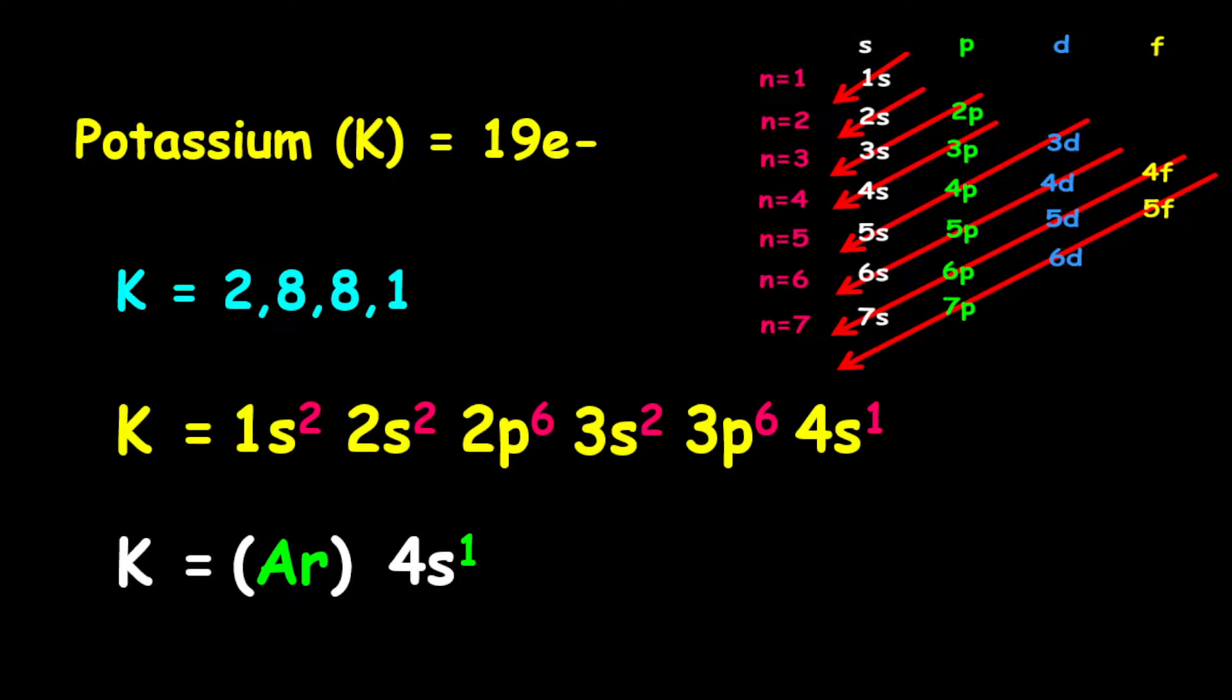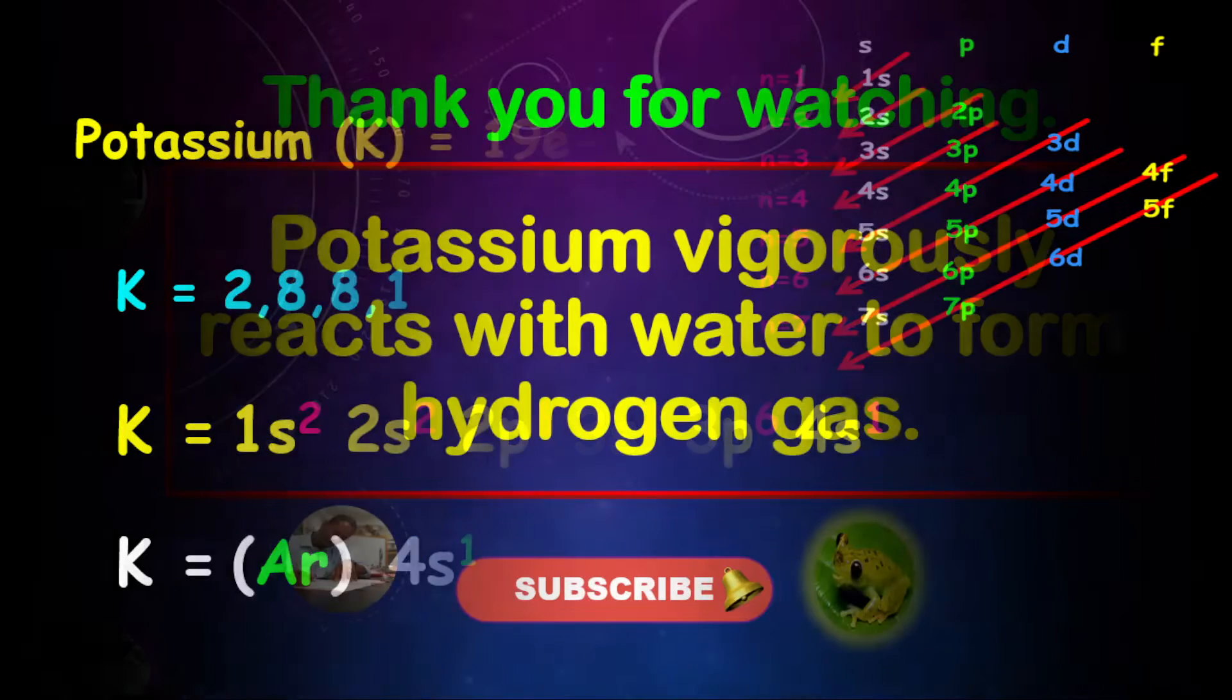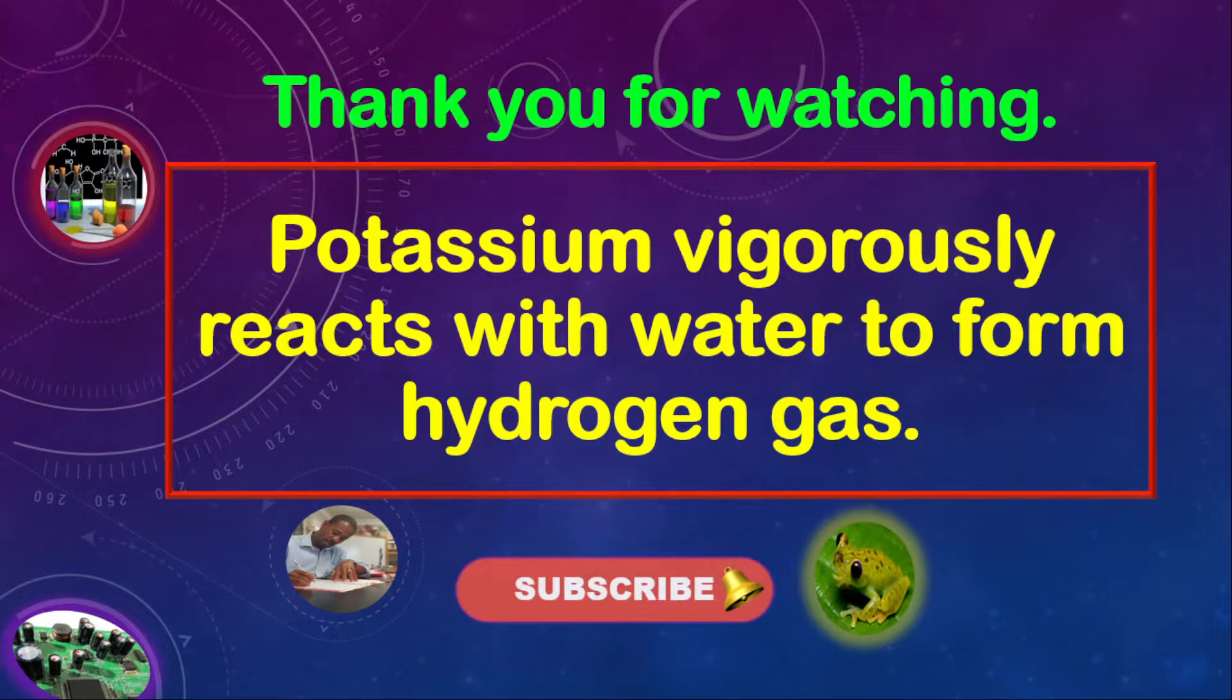So therefore, there is only one valence electron on the potassium atom. Potassium vigorously reacts with water to form hydrogen gas.